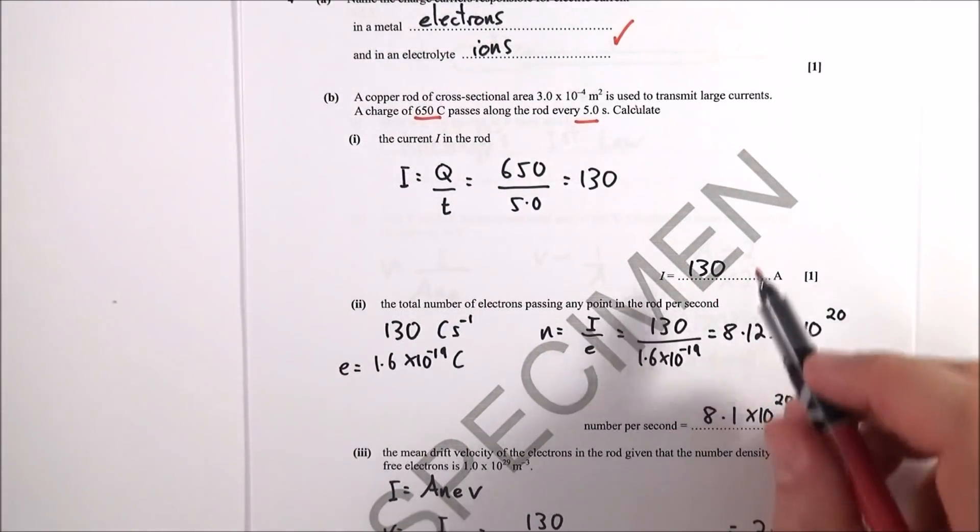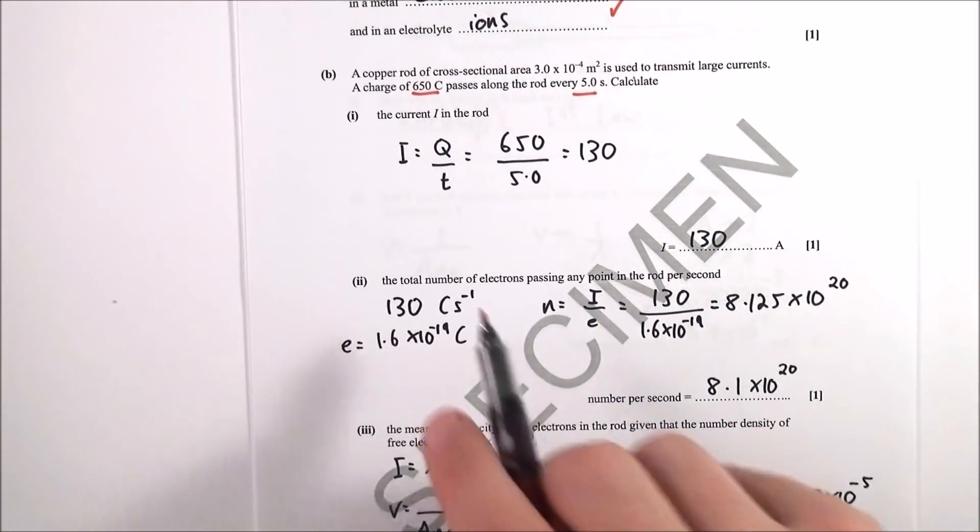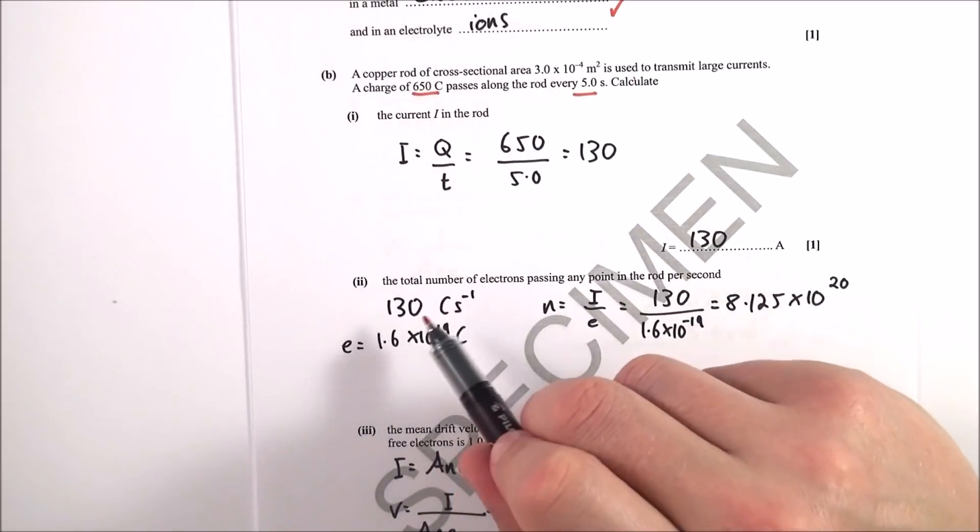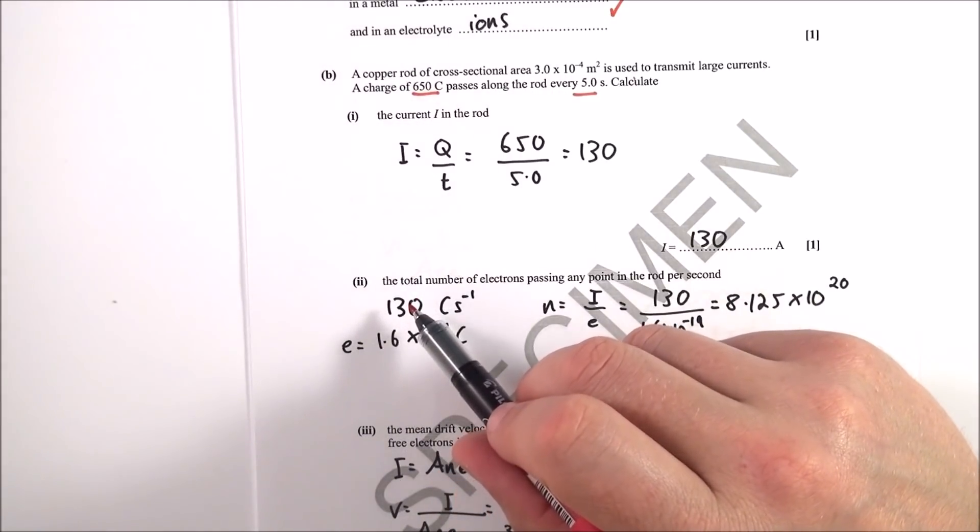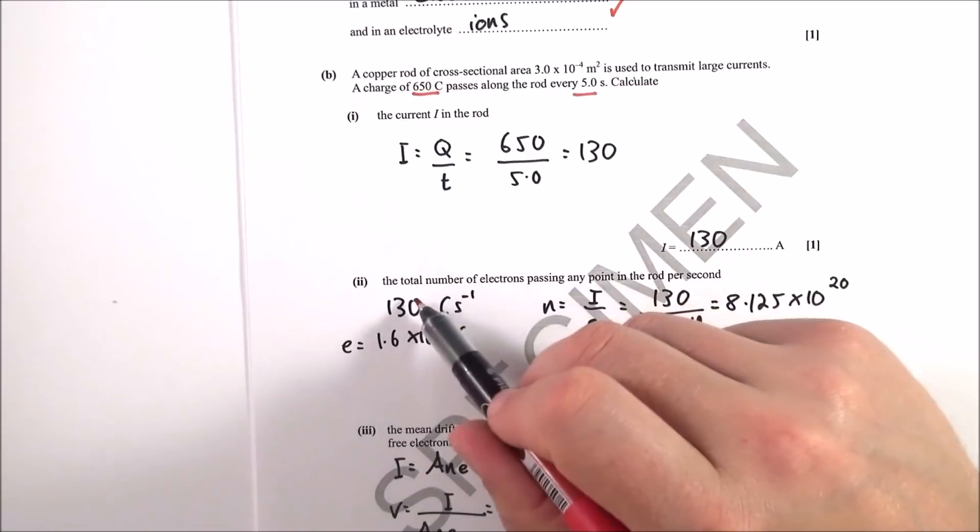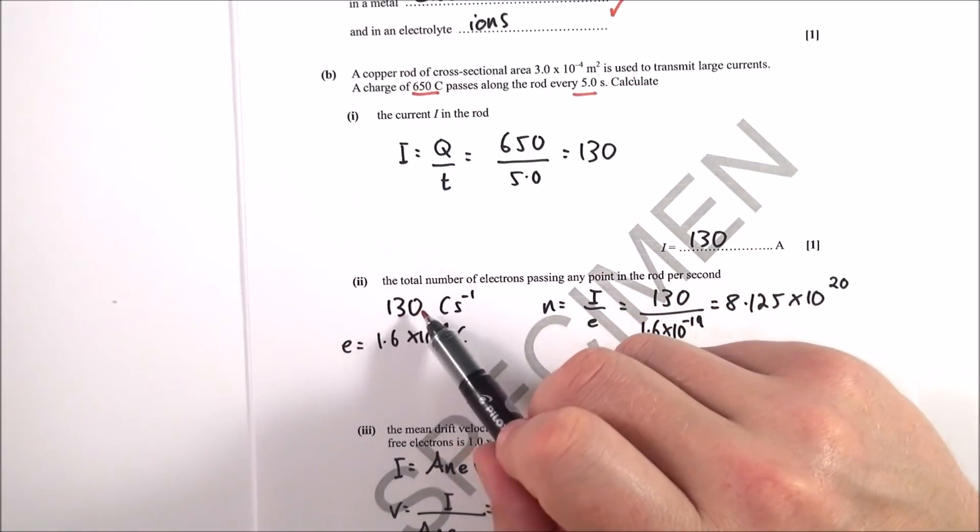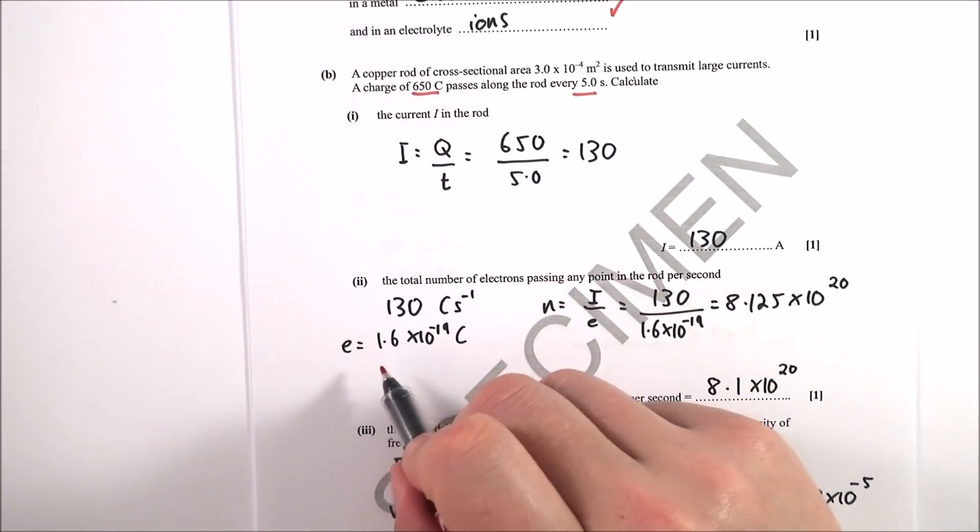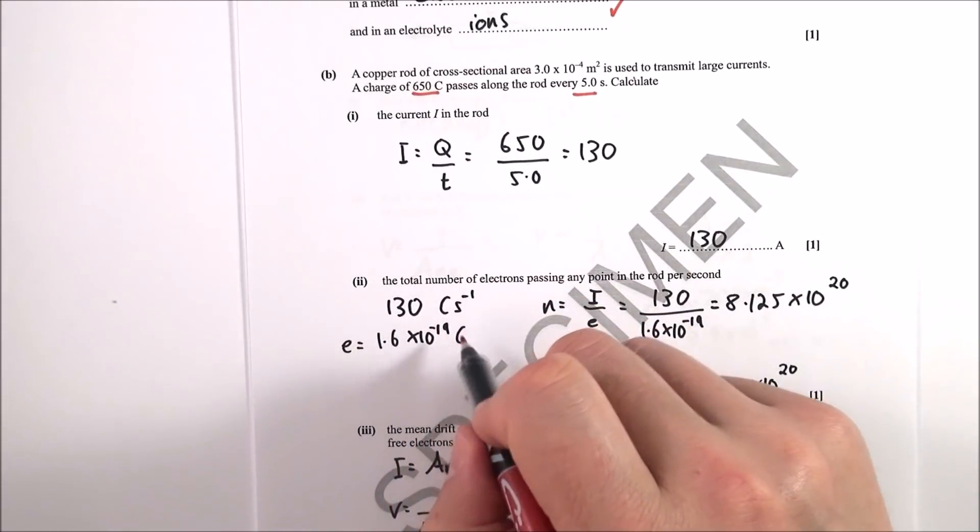Which is pretty big, that's a high current. The total number of electrons passing any point in the rod per second. Well, effectively, because current is the amount of charge transferred per second, you've got 130 coulombs moving per second, and you know that the charge on each electron is 1.6 times 10 to the minus 19 coulombs.